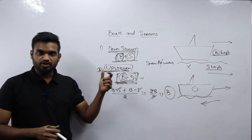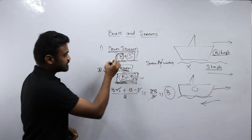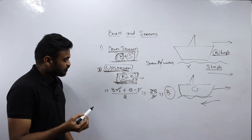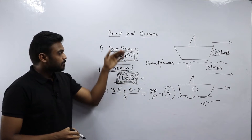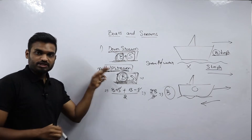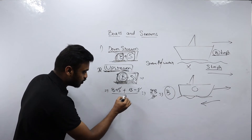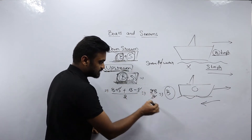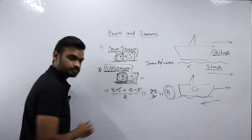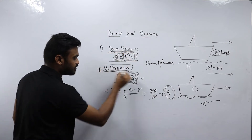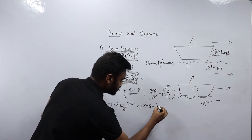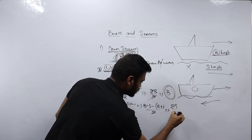Similarly, whenever they ask for the speed of stream, we subtract downstream from upstream: upstream minus downstream divided by 2. That is, (B minus S) minus (B plus S) divided by 2, which gives minus 2S by 2. Since we subtract the greater value from the lower value we get a negative sign — the magnitude is S, the actual speed of water. So: speed of boat = (downstream + upstream) / 2, and speed of stream = (upstream − downstream) / 2.